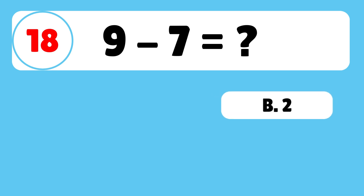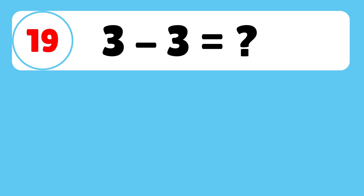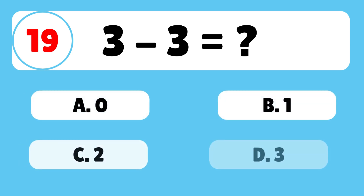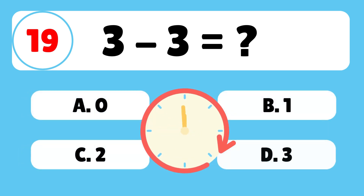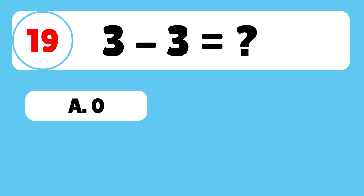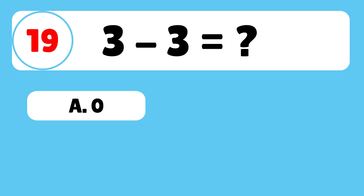9 minus 7 is equal to 2. Question 19: What is 3 minus 3? The answer is A. 3 minus 3 is equal to 0.